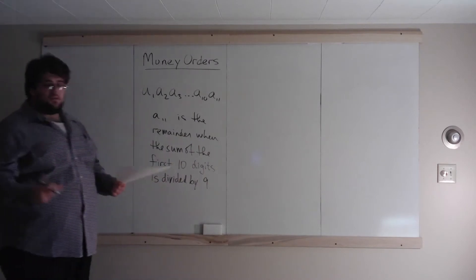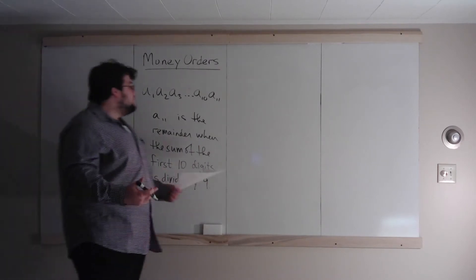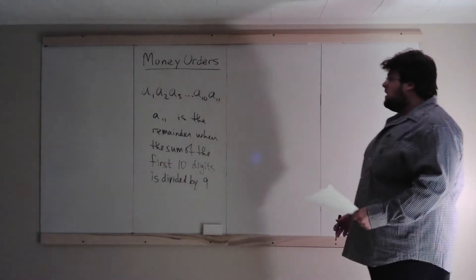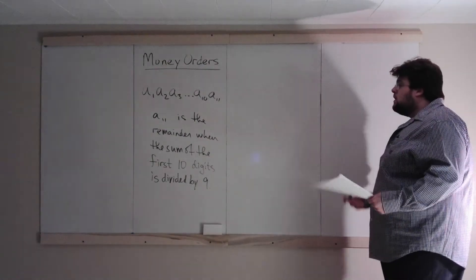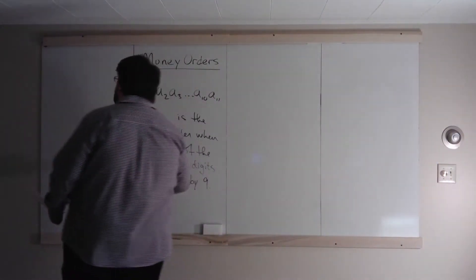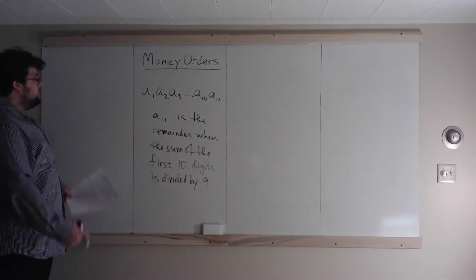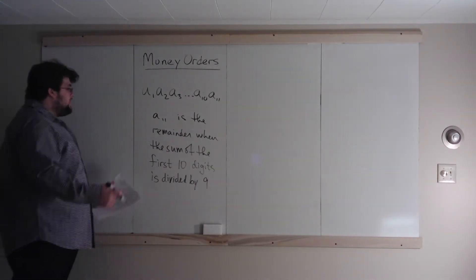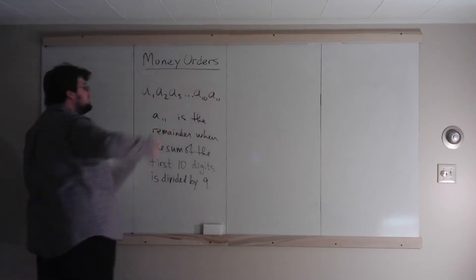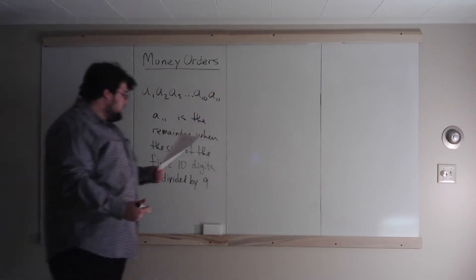So if you take just a random 11-digit number, you can determine whether it makes a valid money order by looking at the first 10, adding them all together, dividing that by 9, looking at the remainder, and seeing if the 11th digit equals that. Let's look at an example.